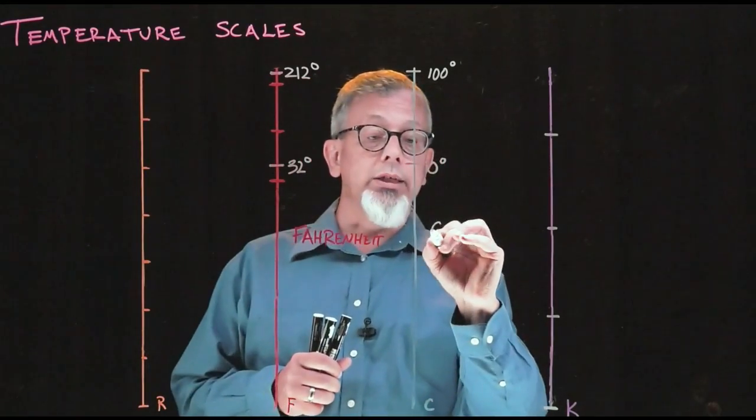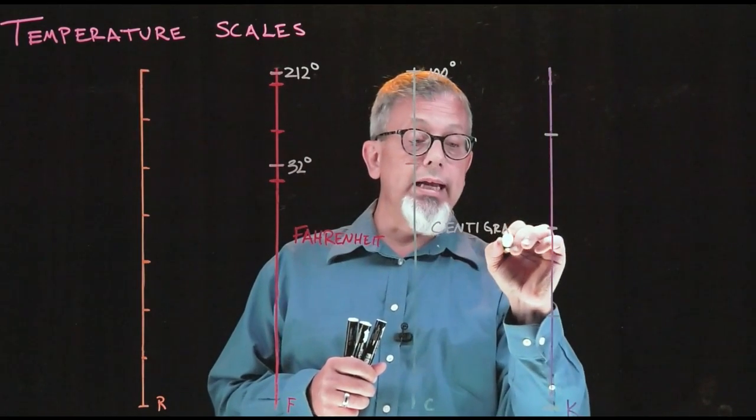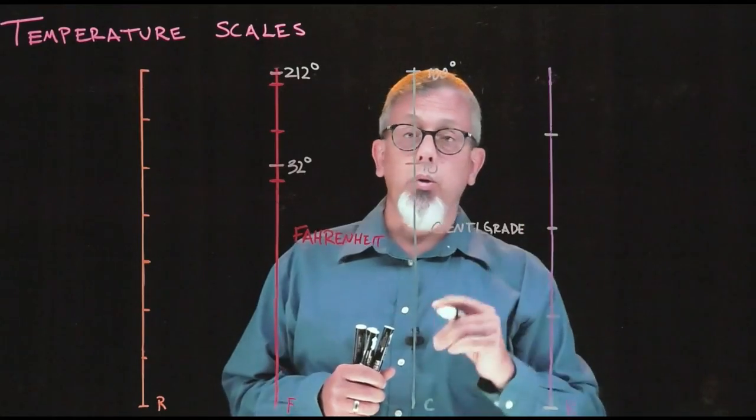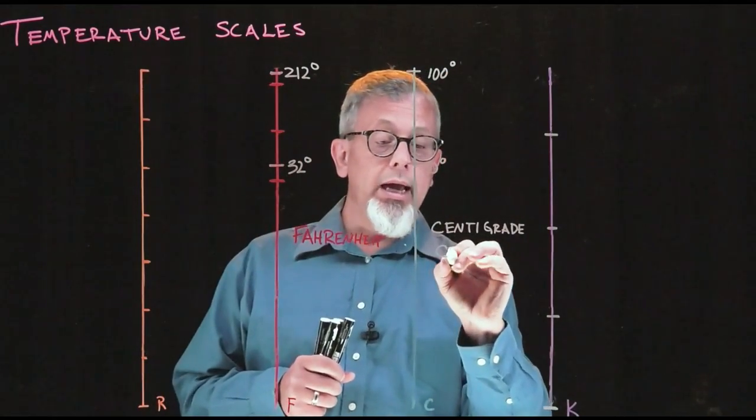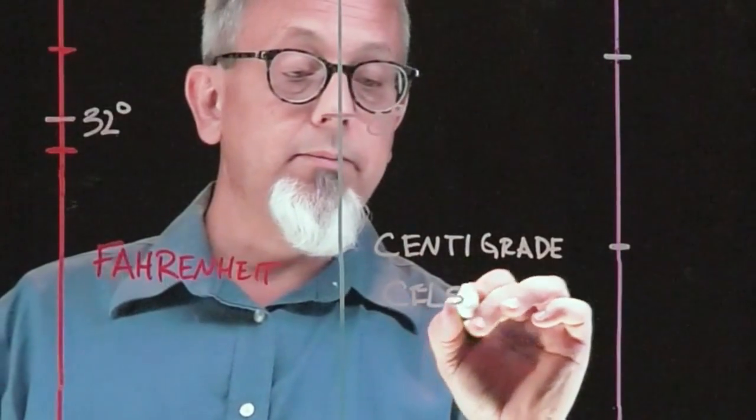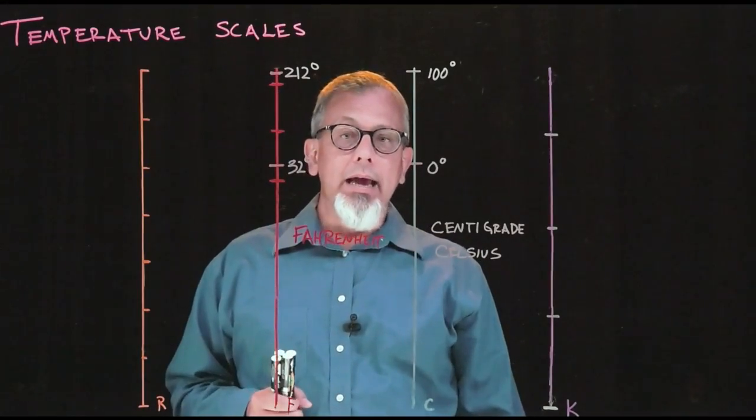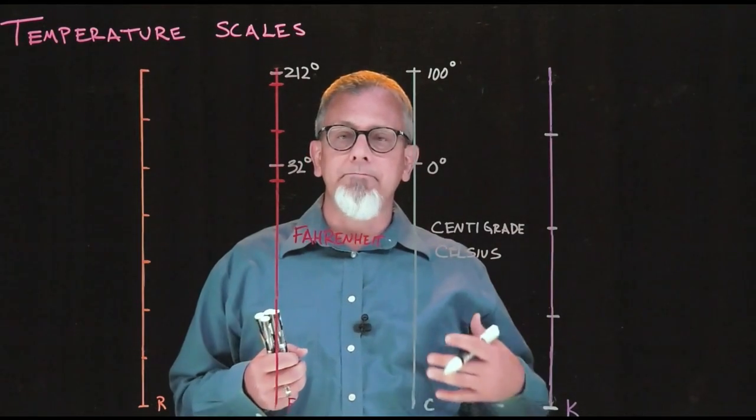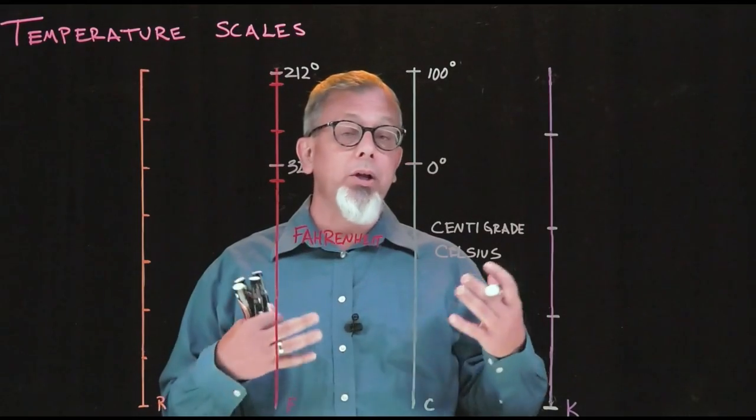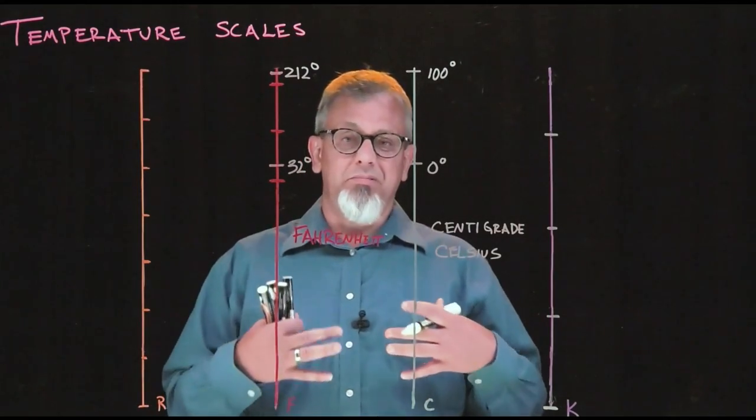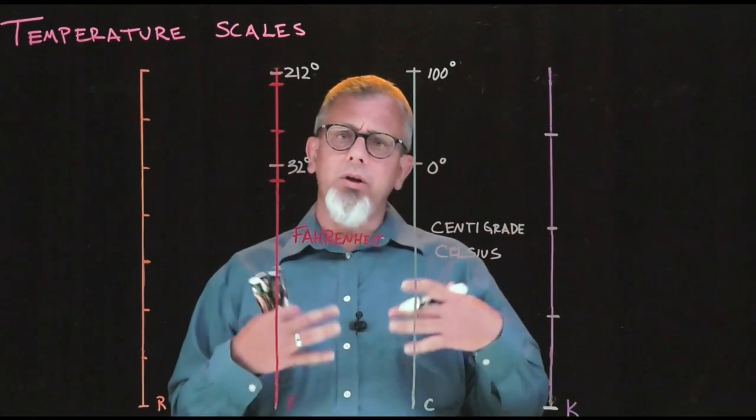Sometimes this scale is called a centigrade scale, meaning 100 gradations, so 100 units that we break things down into, but this scale is also known as Celsius. Now we have our two common scales, and the nice thing about the numbers in these scales is that there are numbers that we feel comfortable with. Numbers between 0 and 100 are what we typically use to measure things, and so we like to basically take our experience and quantify it in numbers that feel comfortable to us.